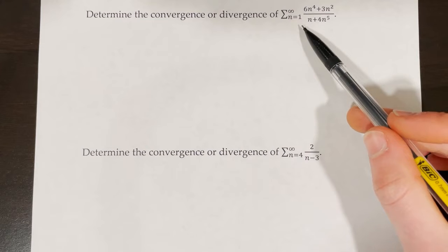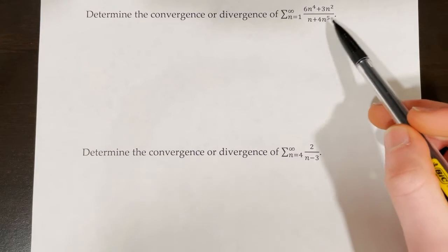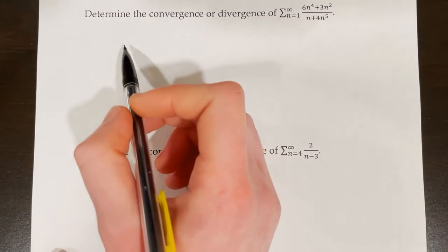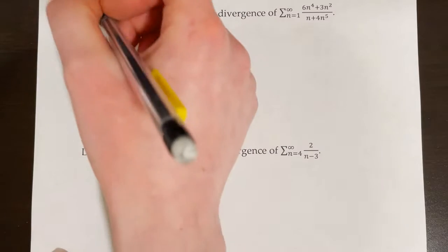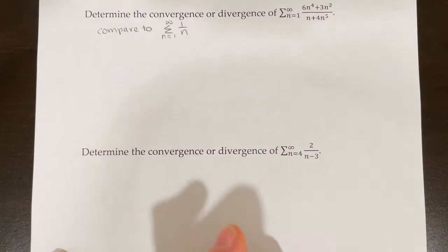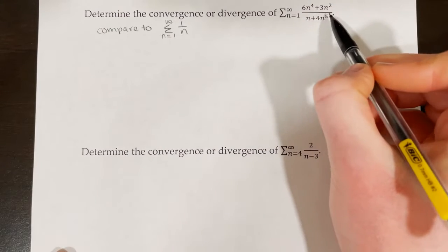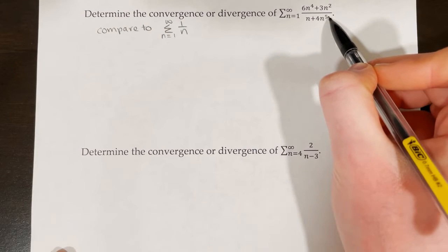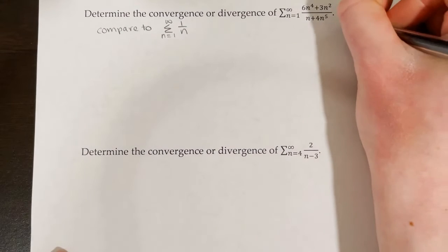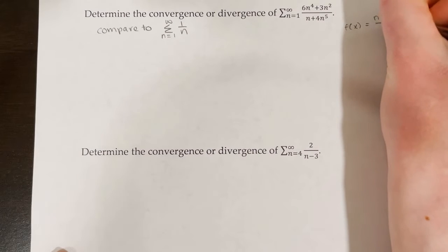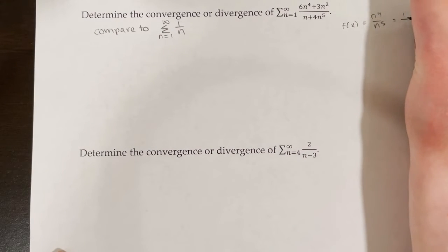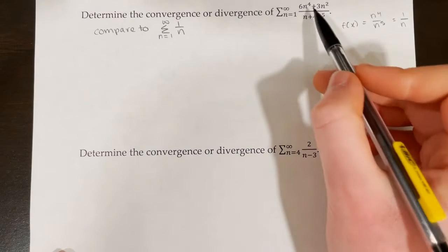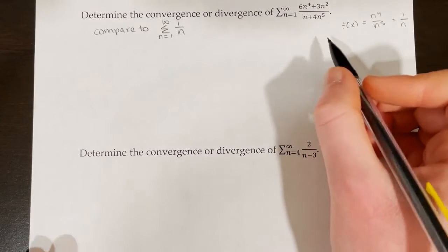Next example: determine the convergence or divergence of the series from n equals 1 to infinity of (6n⁴ + 3n²) over (n + 4n⁵). We want to compare this to 1 over n. The reason is that the greatest power in the numerator is 6n⁴ and in the denominator is 4n⁵. The function n⁴ over n⁵ is identical in behavior to 1 over n, so we focus on the terms affecting the magnitude of numerator and denominator most.